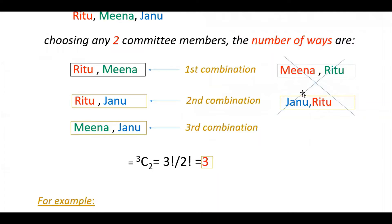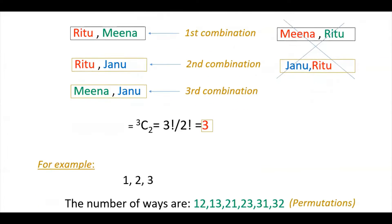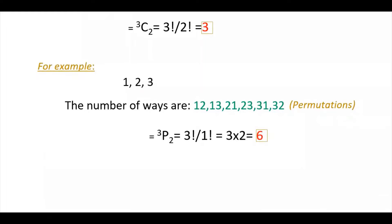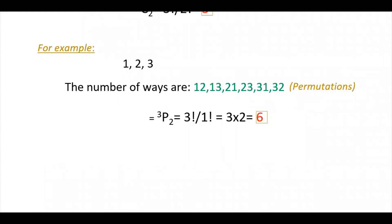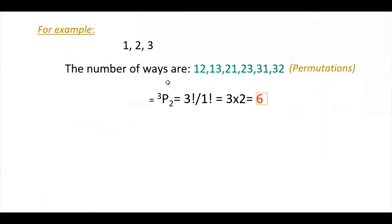But in the previous case, if you select Ritu-Meena, there is no difference between selecting Ritu-Meena or Meena-Ritu. But here there is a difference — 12 is different from 21. So for these type of problems, you have to find permutations. Here it is 3P2. Out of 3 numbers, you select 2. 3P2 equals 3 factorial divided by 1 factorial, that is 6. But in the previous case it was 3. This is the difference between these two types of problems — you have to understand whether to find combinations or permutations.